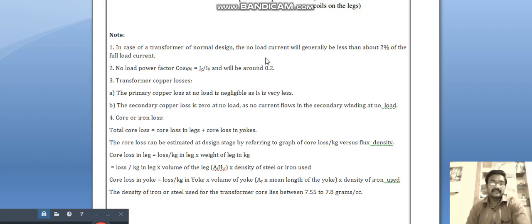Core loss in leg is equal to core loss per kg in leg multiplied with weight of leg in kg. That is equal to loss per kg in leg multiplied with volume of the leg and density of steel or iron used.